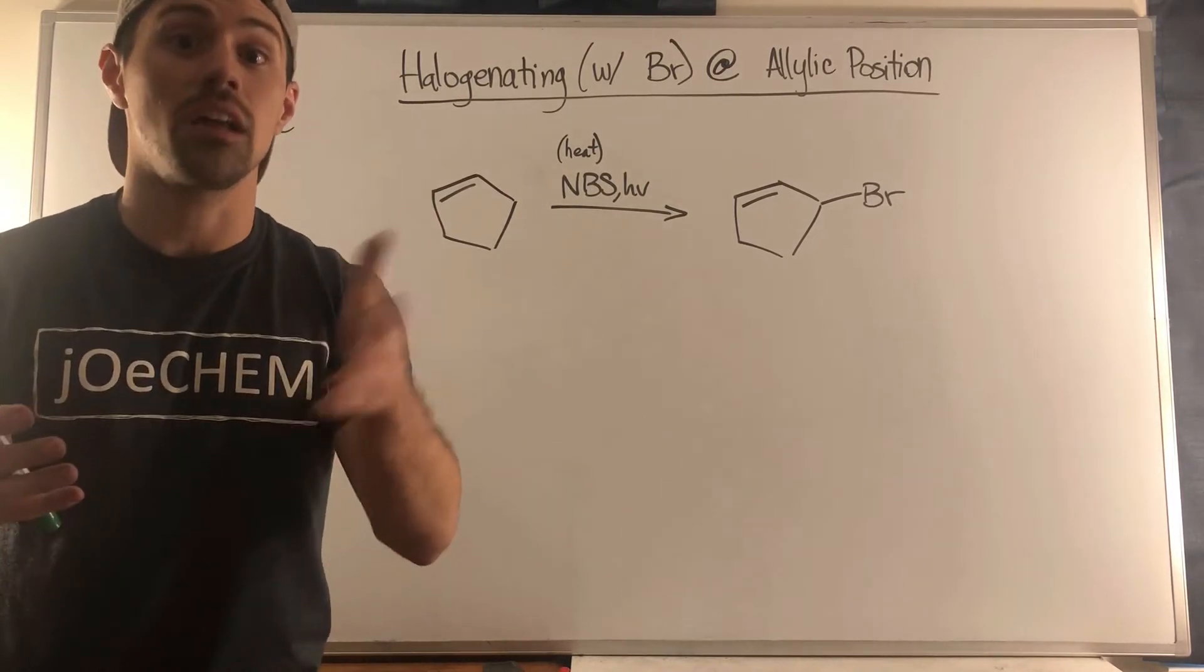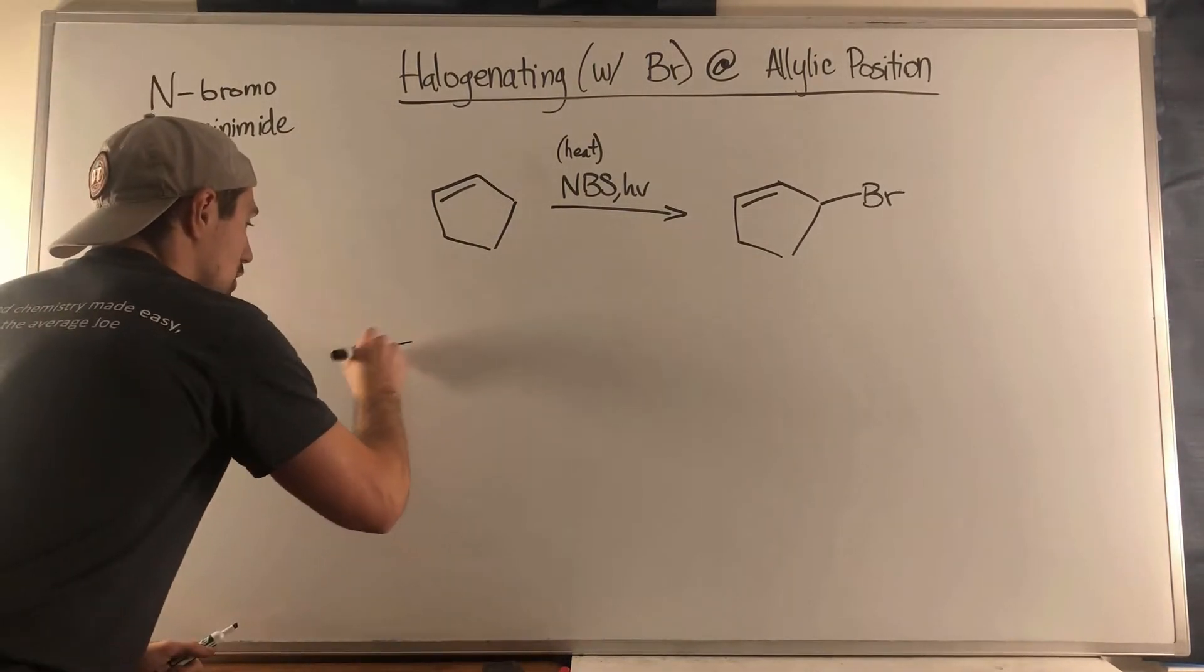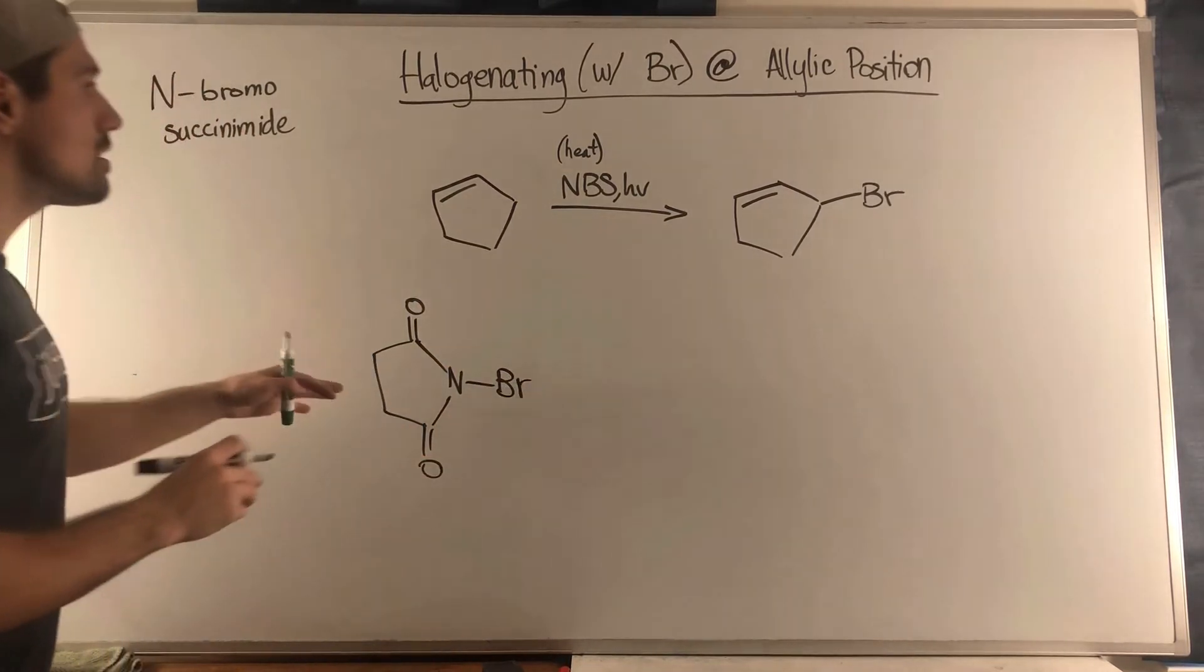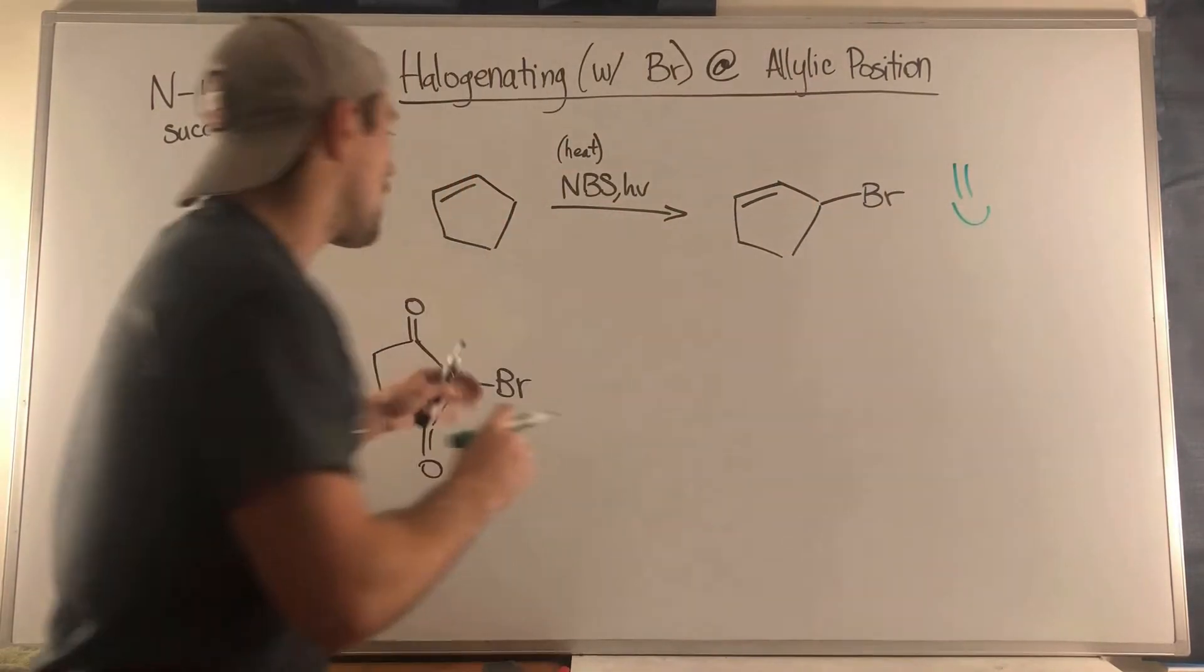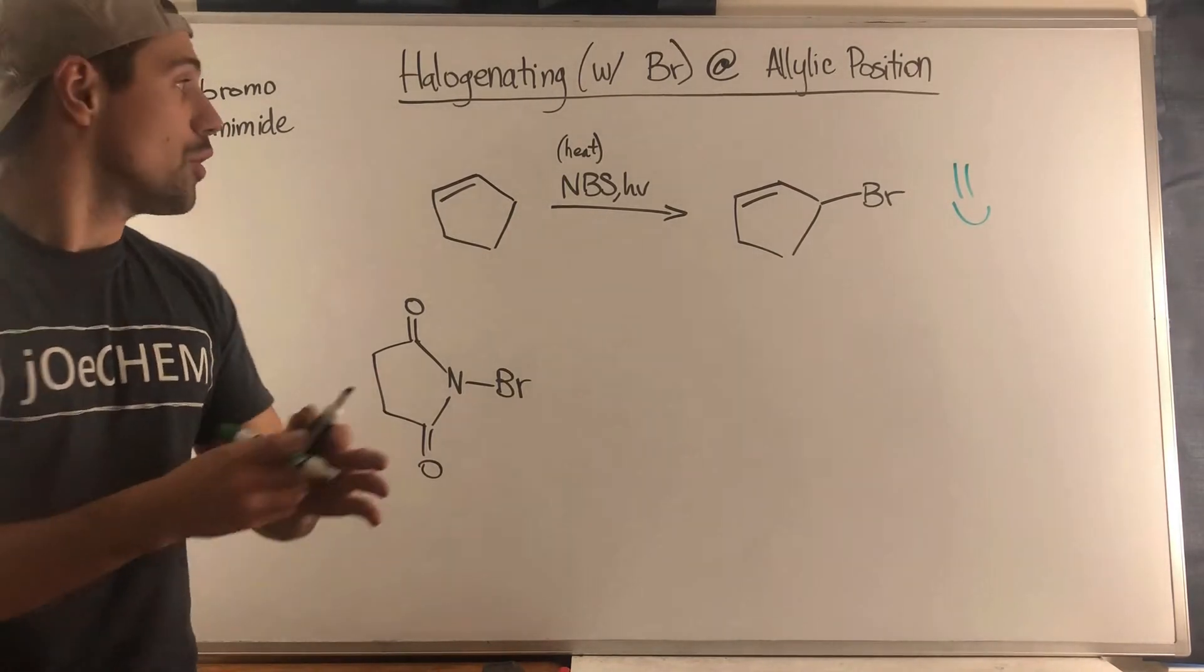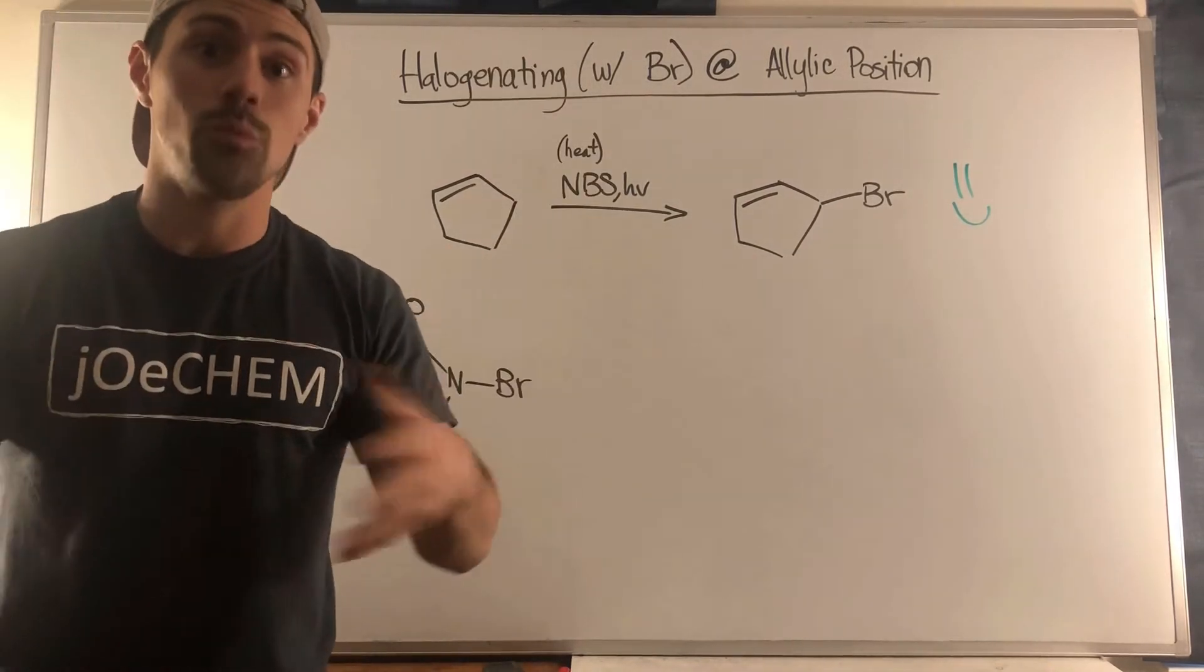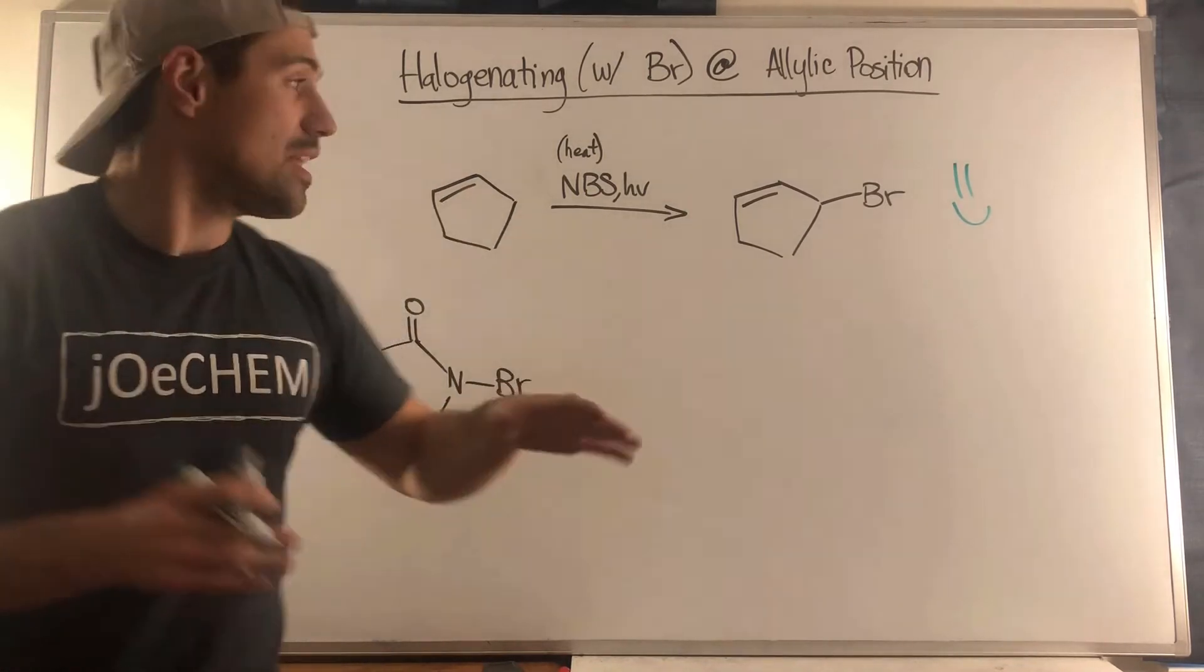So NBS looks like the following. Really why NBS works so well for us in this situation is that we get a low concentration of Br2, low enough to where we don't brominate the double bond. It'll just give us Br2 and then the bond will homolytically cleave when we get a bromine radical. So it basically gives us little bits of Br2 that then become radicals that then interact with the double bond.